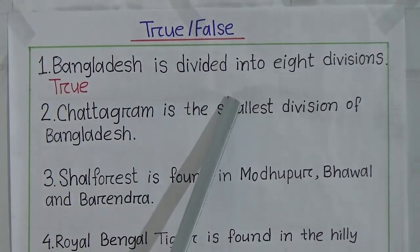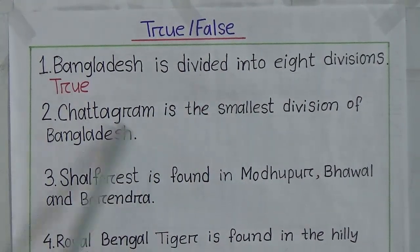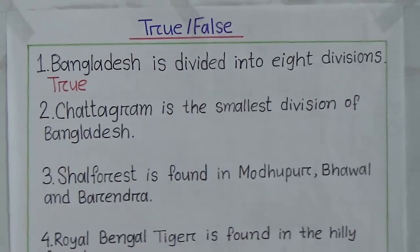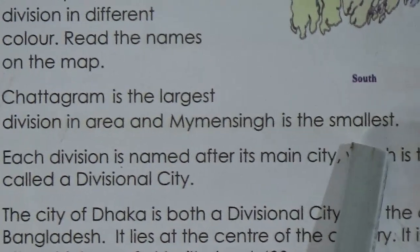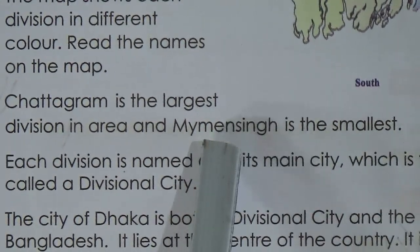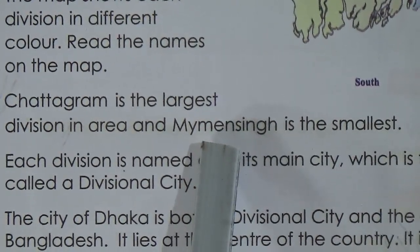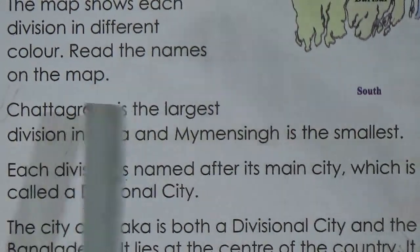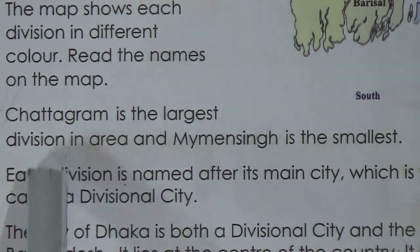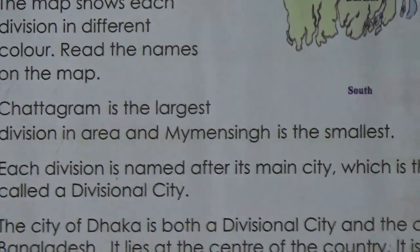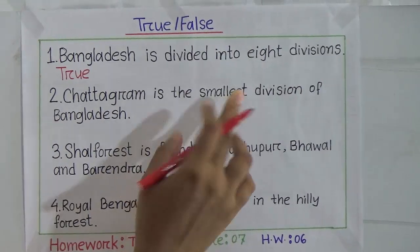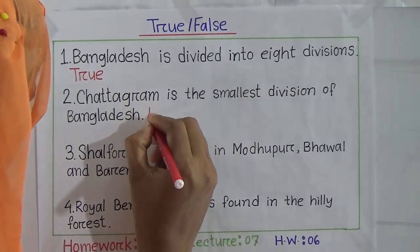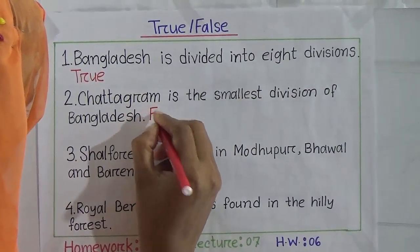Number two: Chattogram is the smallest division of Bangladesh — is it true or false? It is false, because the text says Mymensingh is the smallest division. Chattogram is actually the largest division, so this statement is false.